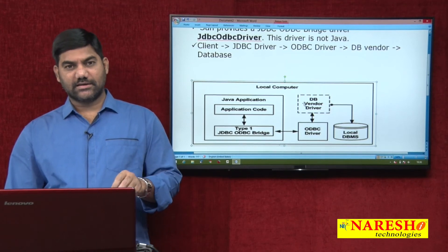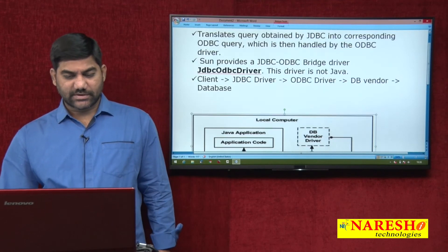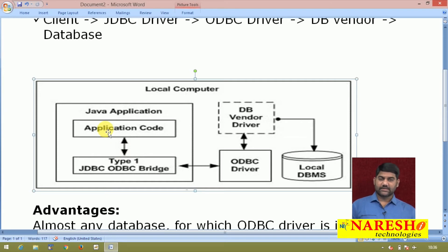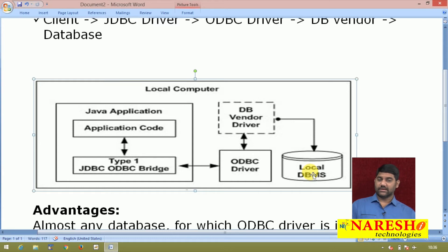Here we are discussing the working style of the type 1 driver. To recap: a Java application sends the call to the JDBC-ODBC bridge. The bridge converts the call into ODBC-understandable format. ODBC converts the call into the current working database library-understandable format and passes it. The vendor driver translates the call to database-understandable format. Finally, the database receives the call, converts it to machine-understandable format, processes it, and generates results.